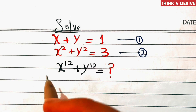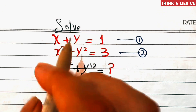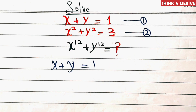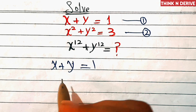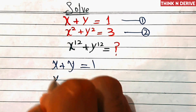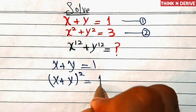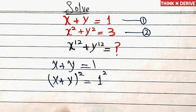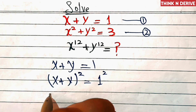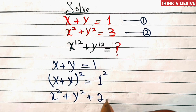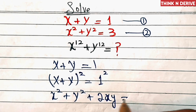In the first step, since we have x plus y equal to 1, we will square both sides to get the value of x times y. Squaring both sides, we have x plus y squared equal to 1 squared. Using the algebraic identity, a plus b squared equals a squared plus b squared plus 2ab, we can write x squared plus y squared plus 2xy equal to 1.